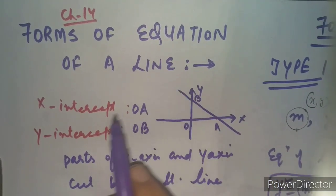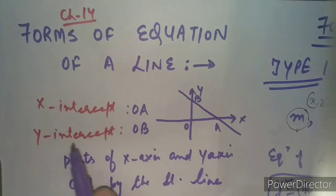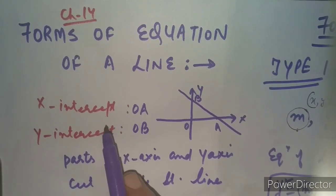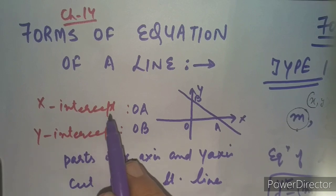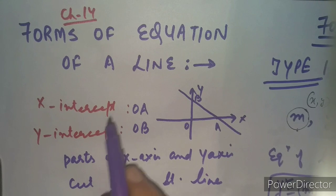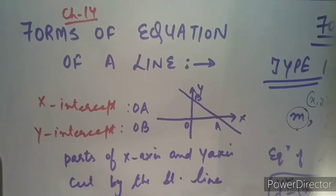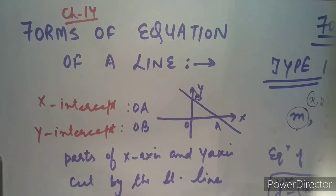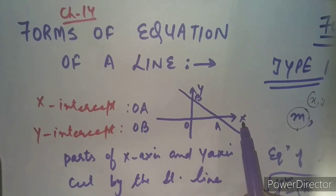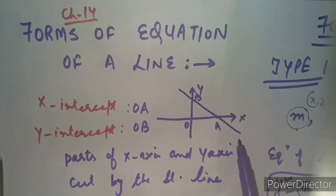Before that I want to explain what is the meaning of x-intercept and y-intercept. Note the spelling — intercept is spelled c-e-p-t. So x-intercept and y-intercept. This is a very small concept but very useful for our next questions to be solved. I draw here the x-axis and y-axis, and this is the straight line I have been drawing in every video of this chapter.